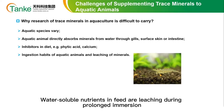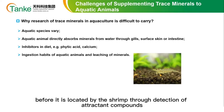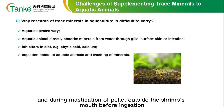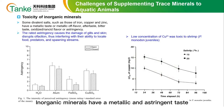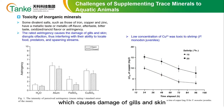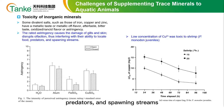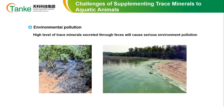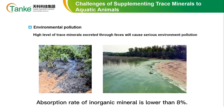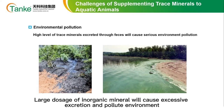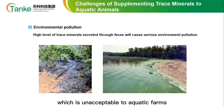Water-soluble nutrients in feed leach out during prolonged immersion, before the feed is located by shrimp through detection of attractant compounds and during mastication of the pellet outside the shrimp's mouth before ingestion. Inorganic minerals have a metallic and astringent taste, which causes damage to gills and skin, and interferes with aquatic animals locating food, predators, and spawning streams. Studies have proved copper could be toxic to shrimp. The absorption rate of inorganic minerals is lower than 8%, and a large dosage will cause excessive excretion and pollute the environment, which is unacceptable to aquatic farms.